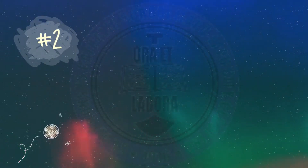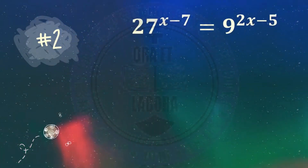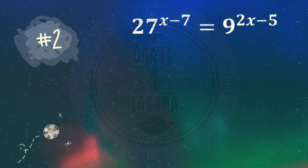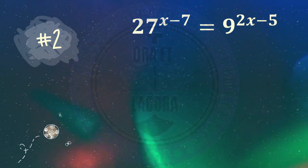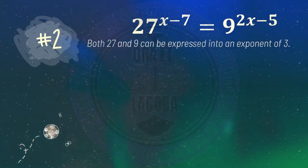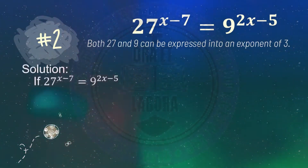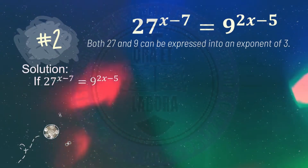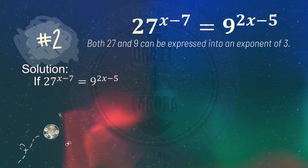Number 2: 27 raised to x minus 7 equals 9 raised to 2x minus 5. Since both 27 and 9 can be expressed as a power of 3, we can say that 27 raised to x minus 7 equals 9 raised to 2x minus 5.